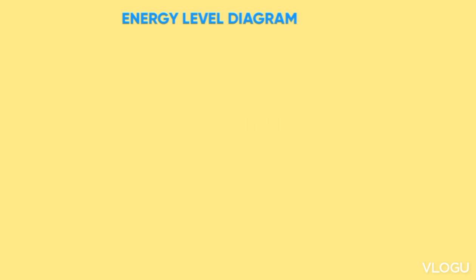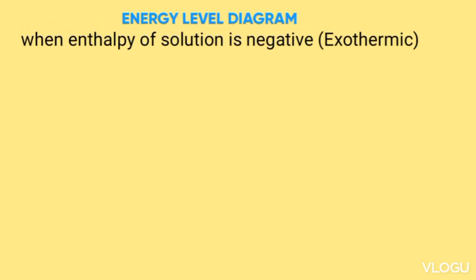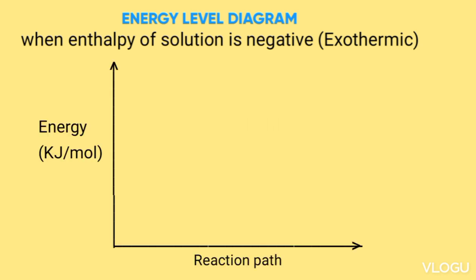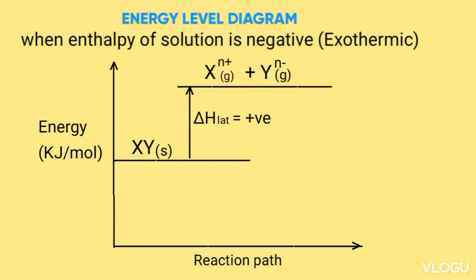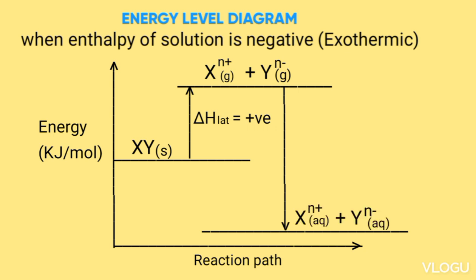Next we draw the energy level diagram when the enthalpy of solution is negative, again using XY solid. The enthalpy of solution is negative when hydration is bigger than lattice energy. XY solid breaks down — lattice energy is positive, so the arrow goes up, forming X⁺ (gas) plus Y⁻ (gas). Then the hydration energy is negative, so the arrow goes down, and its value must be bigger than the lattice energy. Arrow down forms X⁺ (aqueous) plus Y⁻ (aqueous).